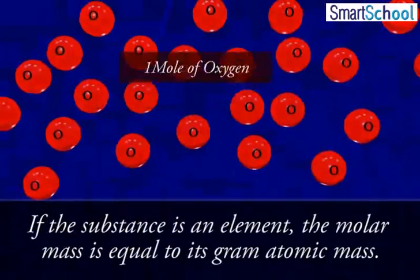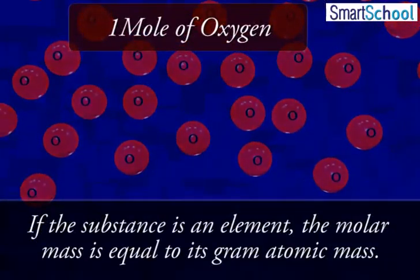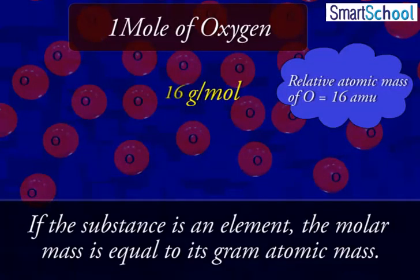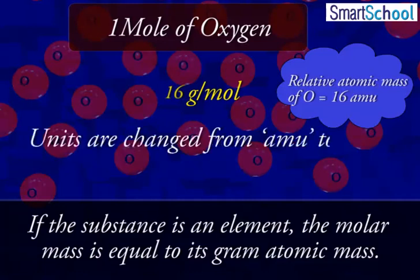If the substance is an element, the molar mass is equal to its gram atomic mass — that is, atomic mass in grams. This means to write the molar mass of an element, we take the same numerical value as that of the atomic mass, but the units are changed from AMU to grams.